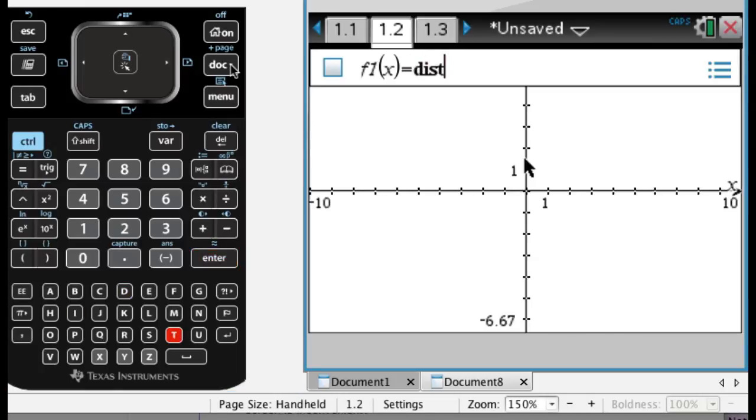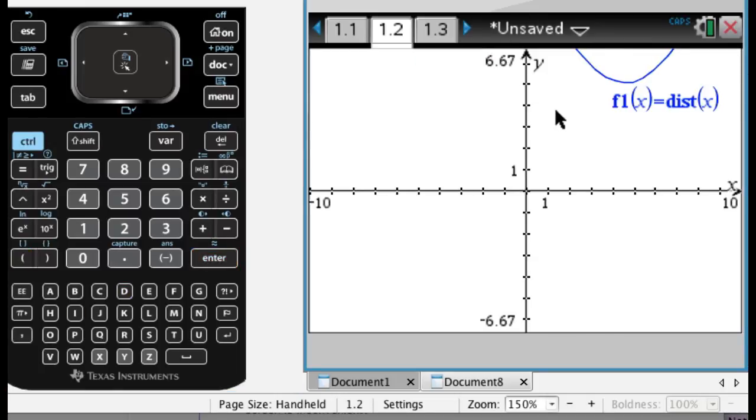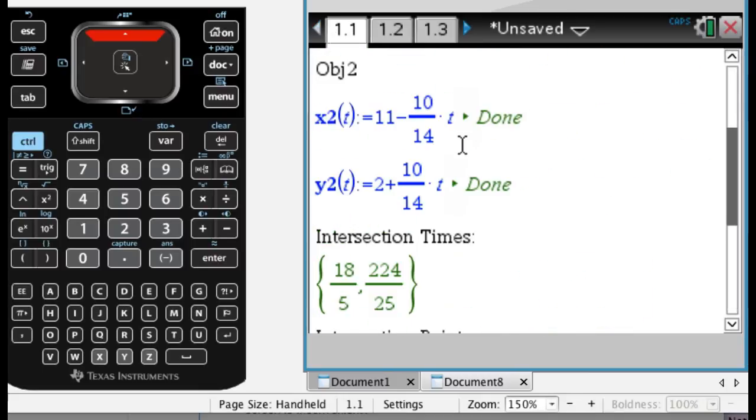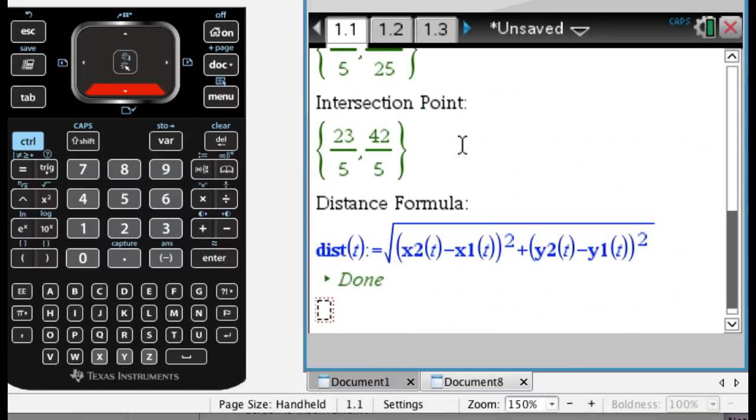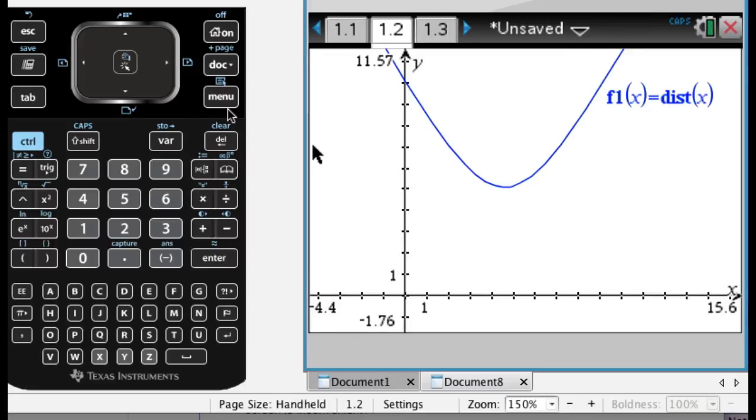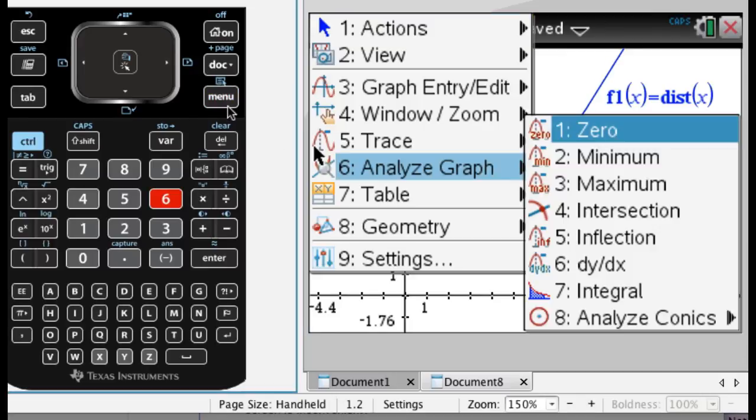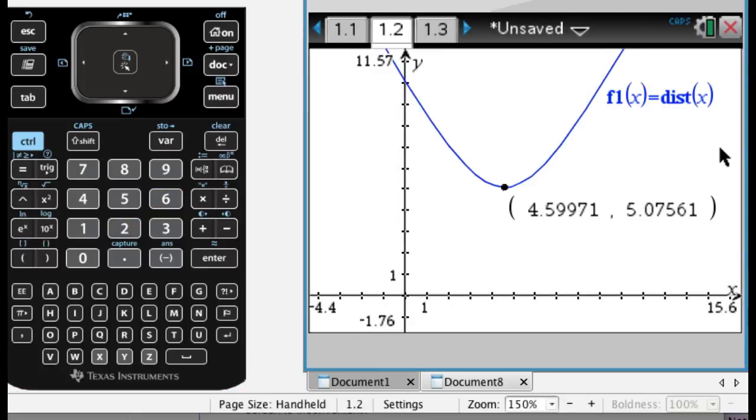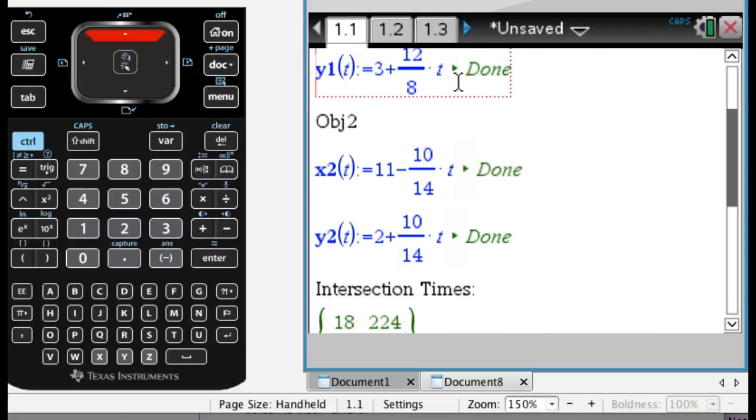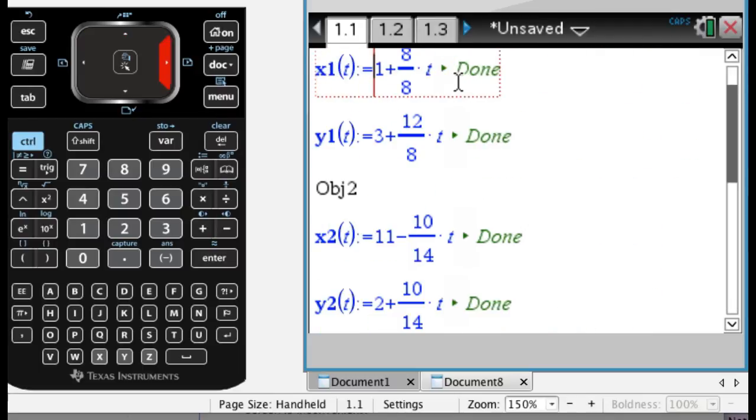Now what happens is if I put in a graph page and go with distance as a function of x, every time I use on my notes page every time I update either of those sets of equations it's going to update this. So if I find the minimum of this function, like so, so that's the time and then that's the distance, so it's 4.599, just try to remember that.